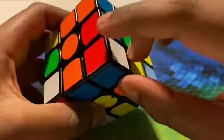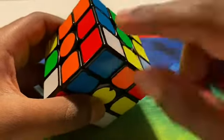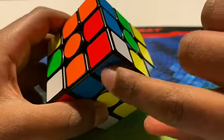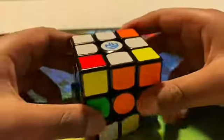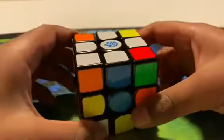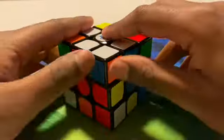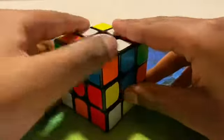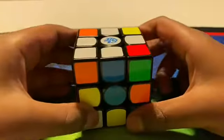So this corner piece right here, it has white, blue and red. So we put this piece under in the bottom row in between all three of these colors, all three of the colors that the center piece is.